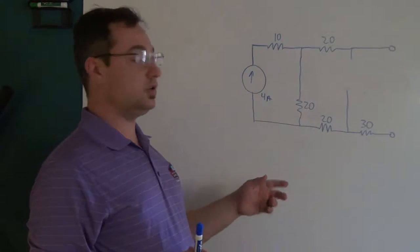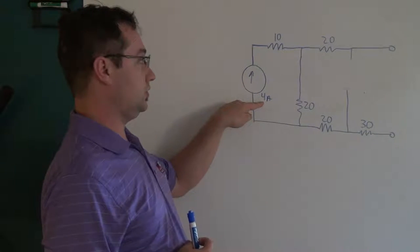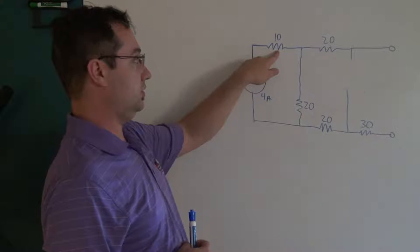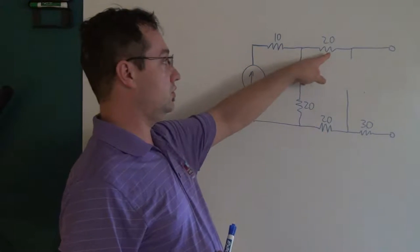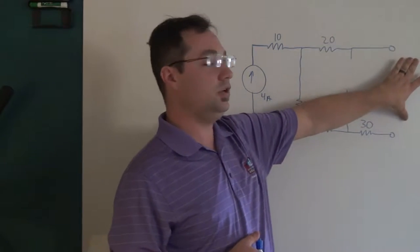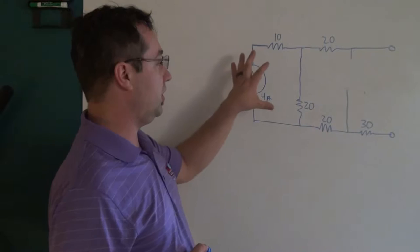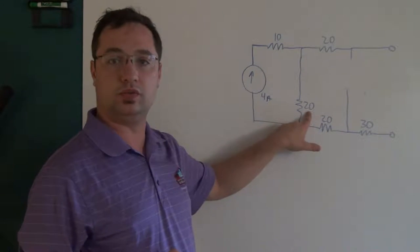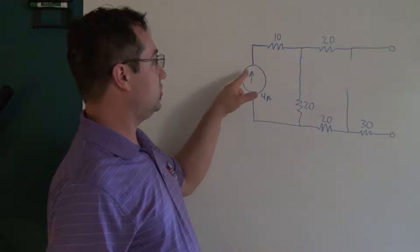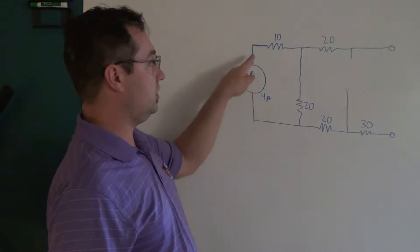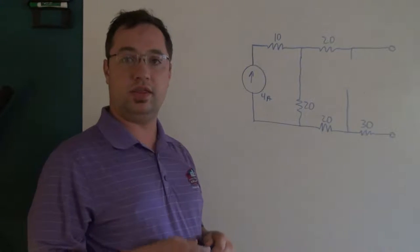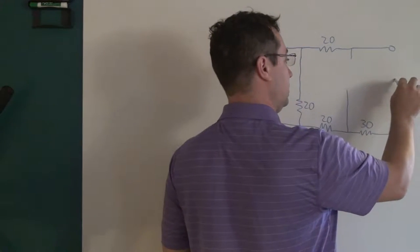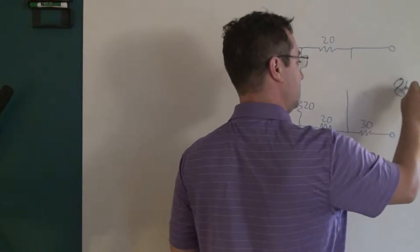What we've simplified the circuit down to is a 4-amp source flowing through a 10-ohm resistor and a 20-ohm resistor. No current flows through the top branch because it's open, or the bottom branch because it's open, so the voltage at the output is entirely dictated by the voltage drop across this 20-ohm resistor. Because the current source is in series with both resistors, you only get 4 amps through the 20-ohm resistor, and that makes the output 80 volts.